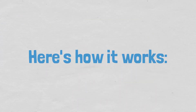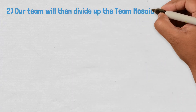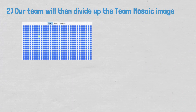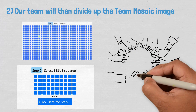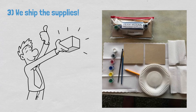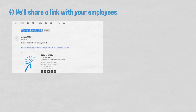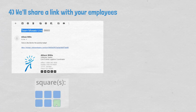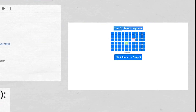Here's how it works. Start with a powerful image from our Team Mosaic library — the image can include your company logo and theme. Our team will then divide up the Team Mosaic image with our software into a series of squares or tiles, one for each participant. We ship the supplies to be distributed to your participants on the day of the mosaic. We'll share a link with your employees so they can choose a tile, kind of like choosing a seat on a flight. This step also includes facilitation and a short instructional video.